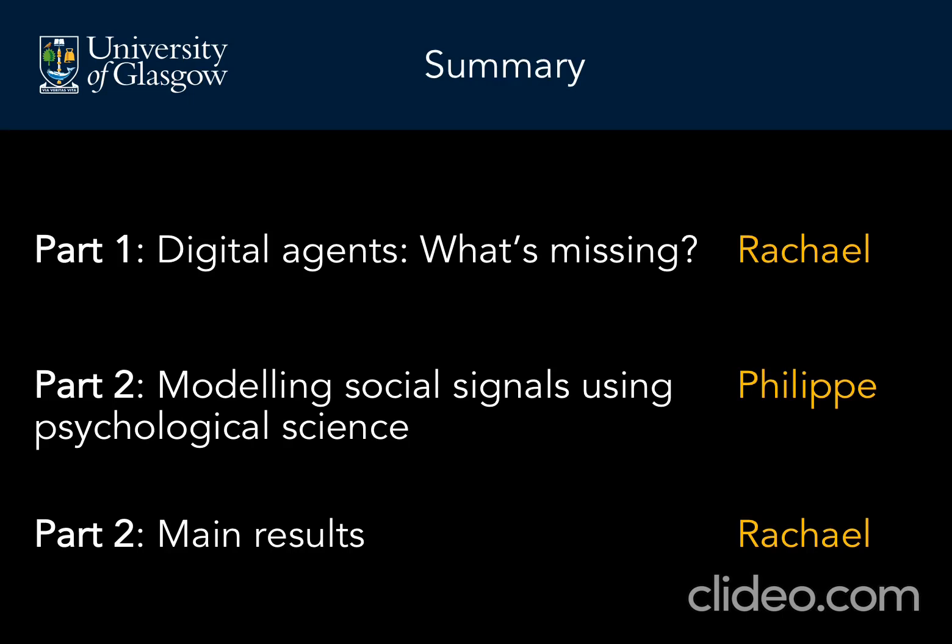The talk will be in three parts. I'll first highlight what is missing from the social signalling capabilities of digital agents. Philip will then present a new method developed in Glasgow that can be used to design improved social signals. And finally, I will briefly present our main results and their impact on digital agents.